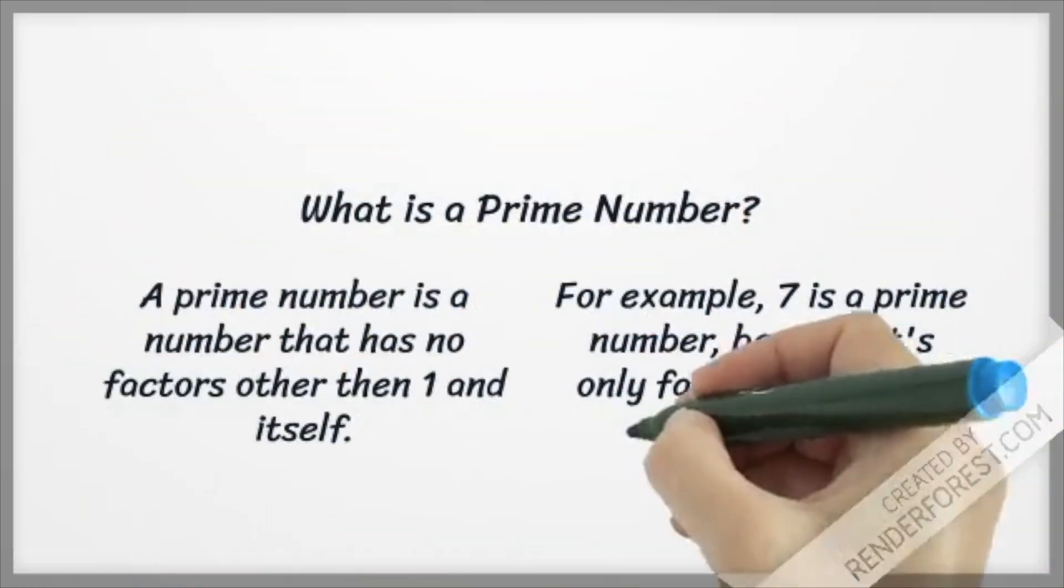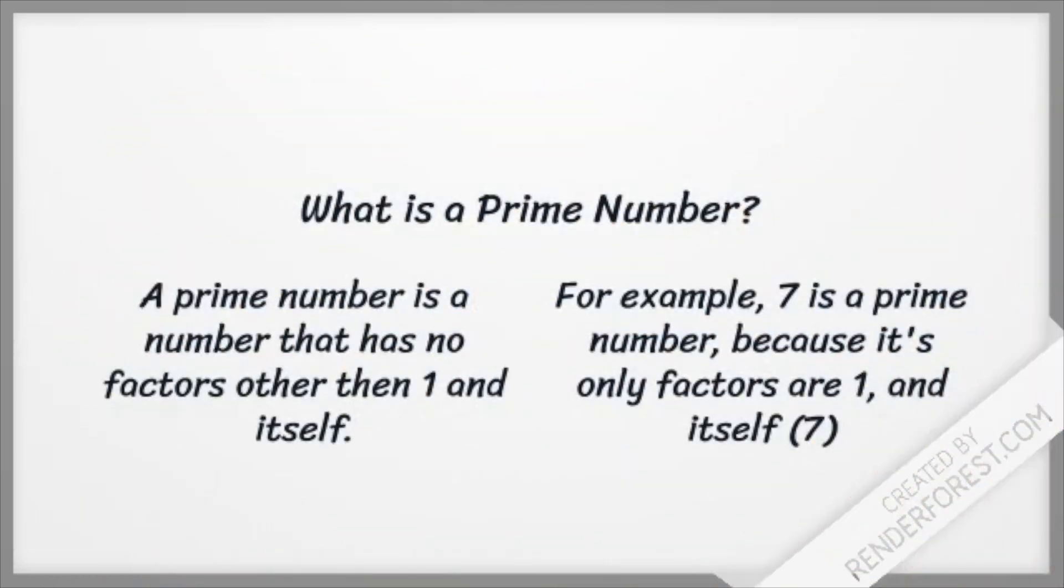What is a prime number? A prime number is a number that has no factors other than 1 and itself. For example, 7 is a prime number because its only factors are 1 and itself, 7.